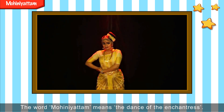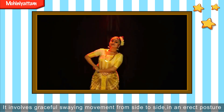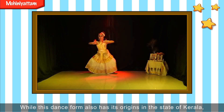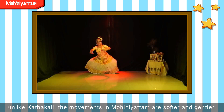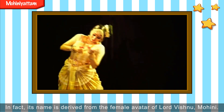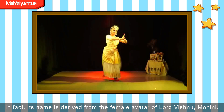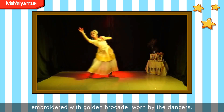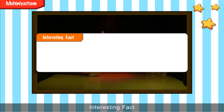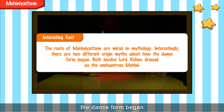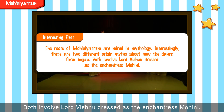Mohiniattam — the word means 'the dance of the enchantress.' It involves graceful swaying movement from side to side in an erect posture. While this dance form also has its origins in Kerala, unlike Kathakali, the movements in Mohiniattam are softer and gentler. Its name is derived from Mohini, the female avatar of Lord Vishnu. The costumes are usually white saris embroidered with golden brocade. Interesting fact: the roots of Mohiniattam are steeped in mythology, and there are two different origin myths about how the dance form began — both involving Lord Vishnu dressed as the enchantress Mohini.